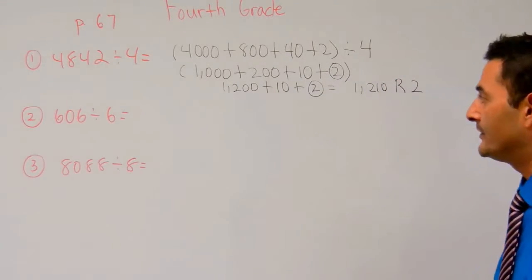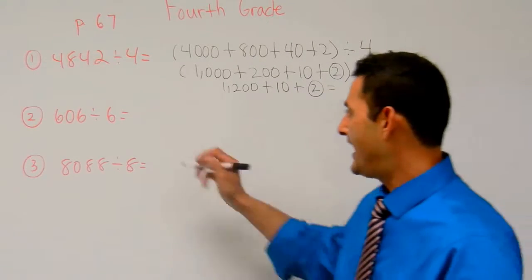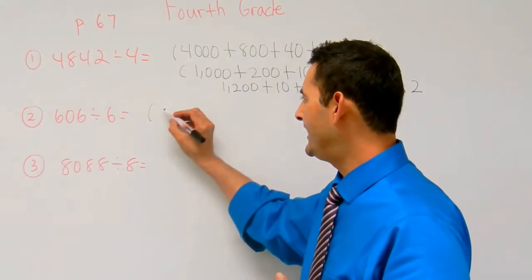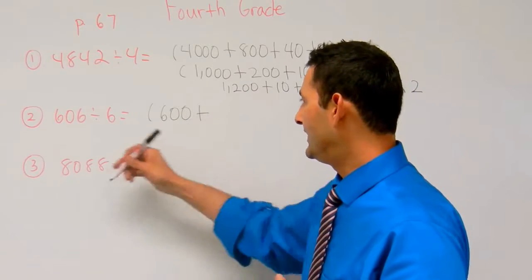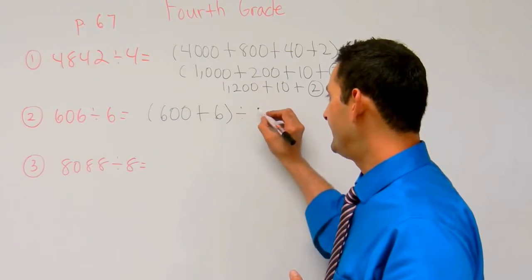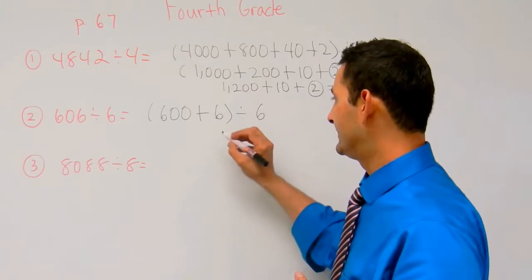Now let's do number 2. Here we have 606 divided by 6. So what I'm going to do now is 600 plus we have 0 tens plus 6 divided by 6.